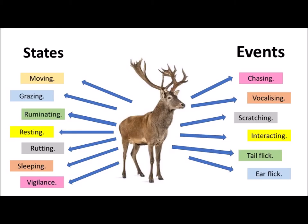Here's an example of how we go about recording animal behaviour. Animals basically perform two types of behaviour: those that are long duration, we call these states, and those that are short duration, and we call those events.